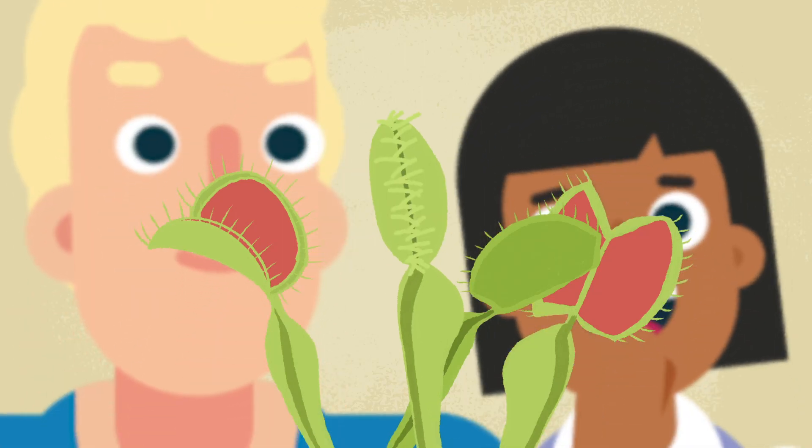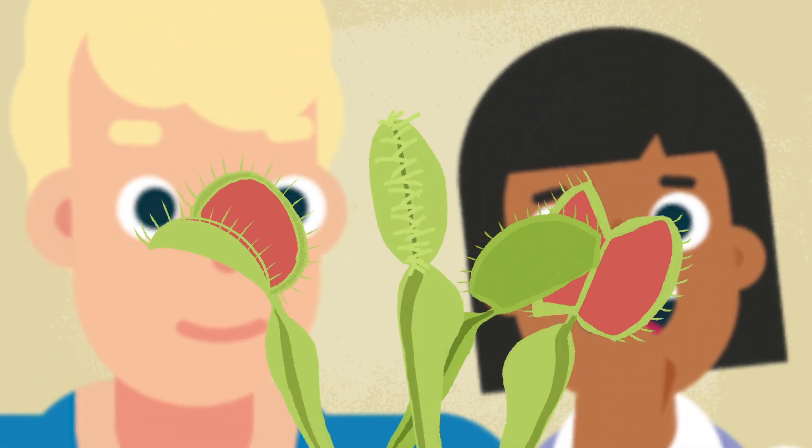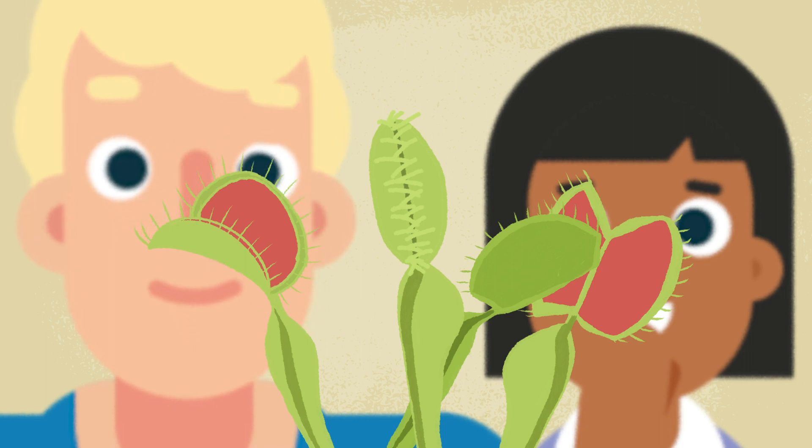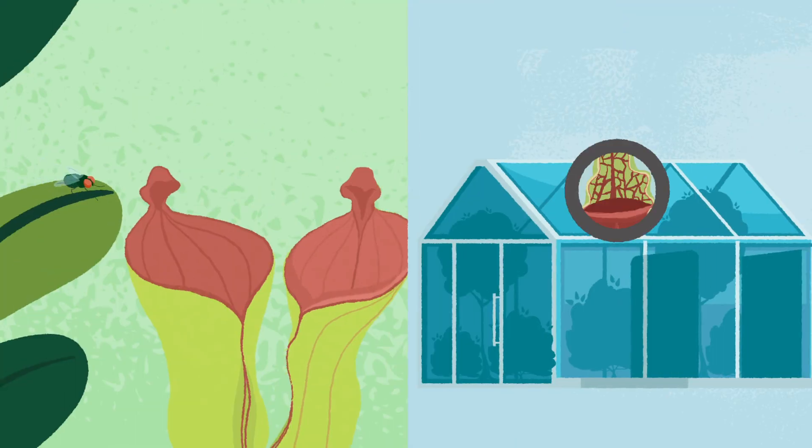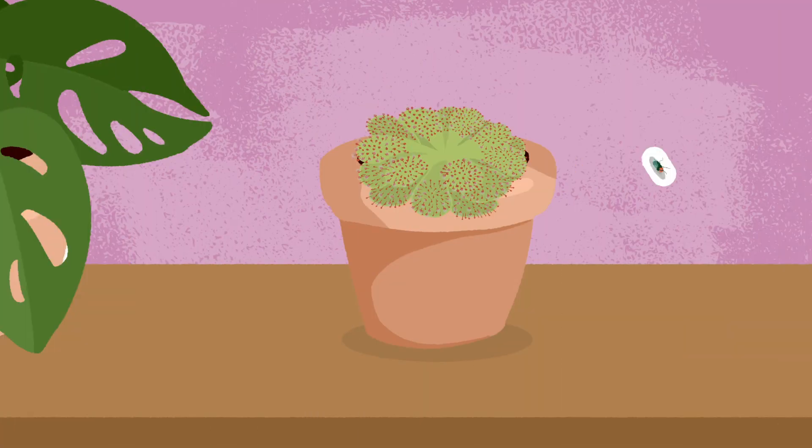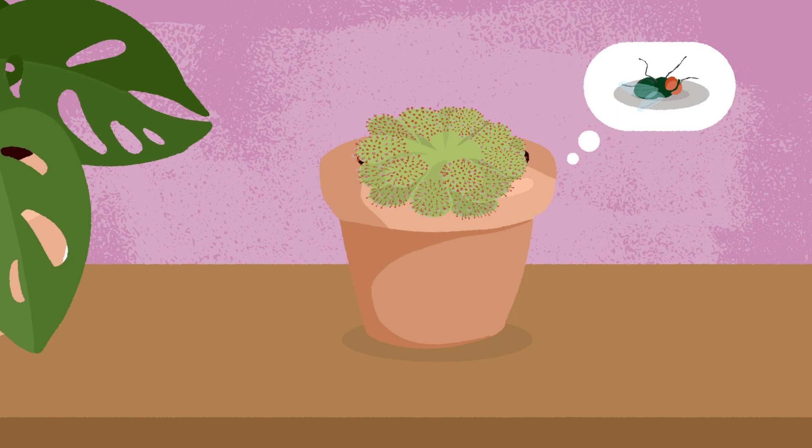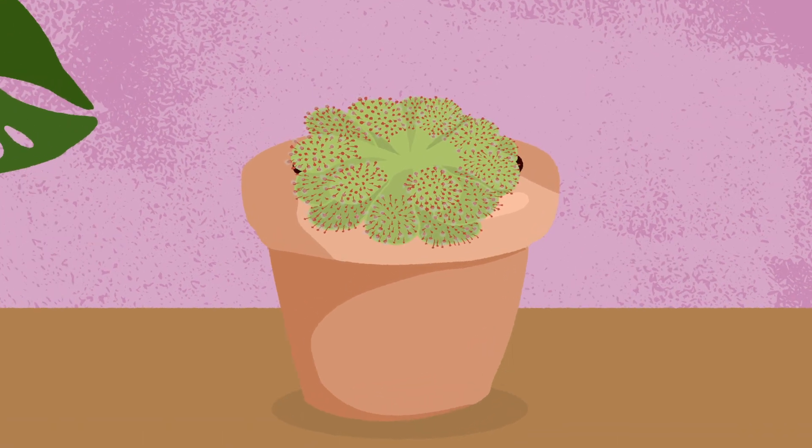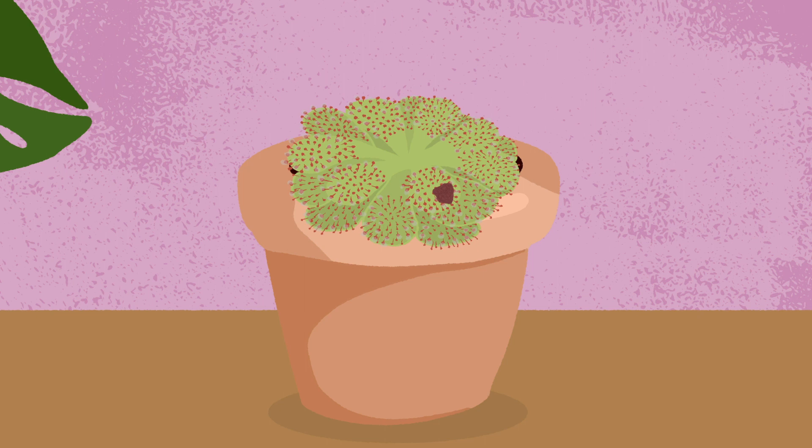Seeing carnivorous plants trap and digest insects entertains children and adults for hours. For plants grown outside and in greenhouses, they will eat a lot of prey on their own. For gardeners choosing to grow plants indoors, the buffet options are limited. Feeding dried bloodworms can be beneficial to many carnivorous plants.